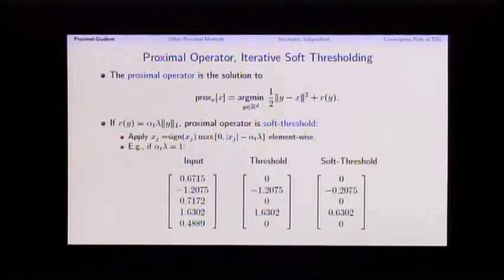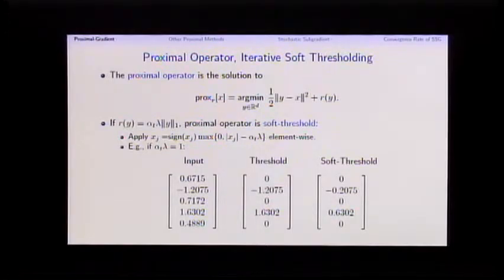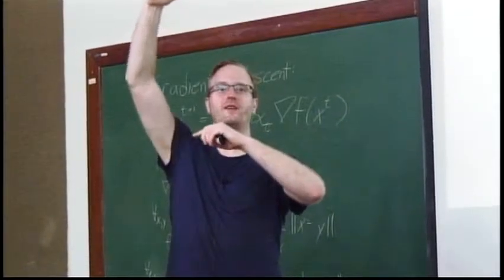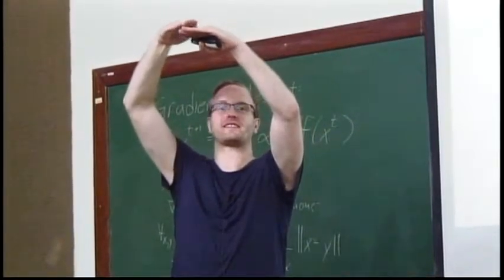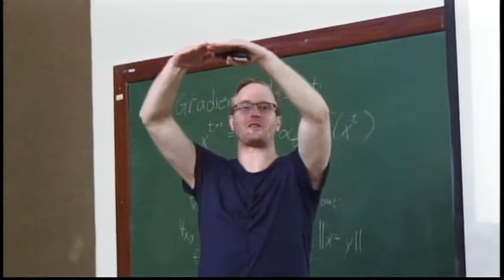If you have the L-infinity norm, you do have a specific closed-form solution for the proximal operator. It can be computed in O(d log d) — you sort the values and find the appropriate threshold. You may even be able to do it in linear time.